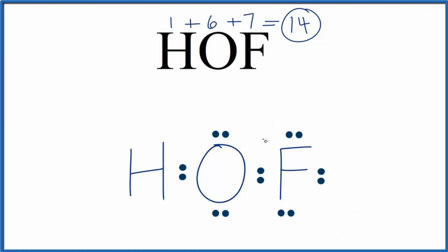Fluorine has eight valence electrons, an octet. Oxygen has an octet. And then hydrogen, it only needs two valence electrons. So it's complete as well. So this is the Lewis structure for HOF.